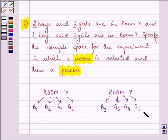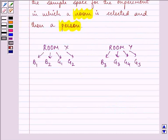Now we need to specify the sample space in which the room is selected and then a person. So the sample space will be written like this. Sample space S is equal to.